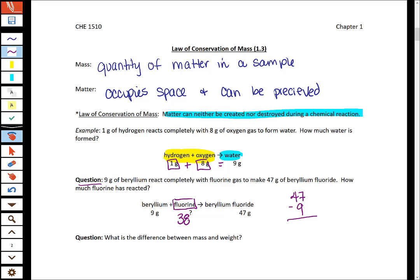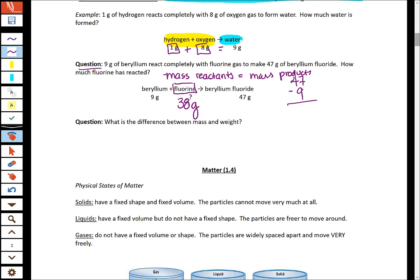You probably got 38 grams because your reactants, so the total mass of the reactants, has to equal the total mass of the products. Now notice that we've been saying mass and not weight. And so the difference between mass and weight, mass is not dependent on gravity.